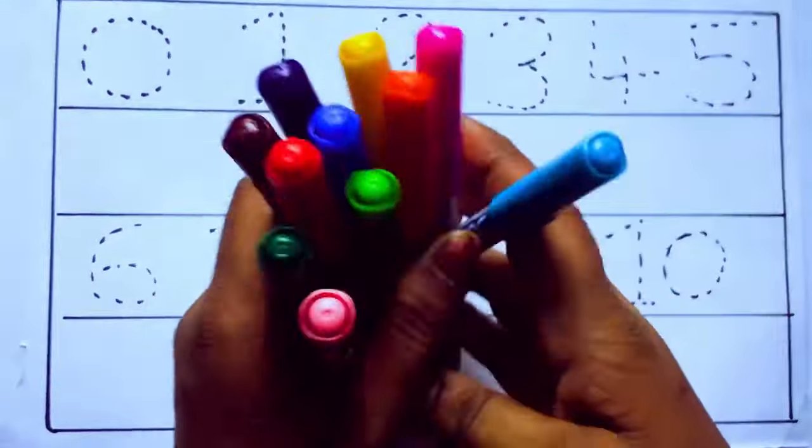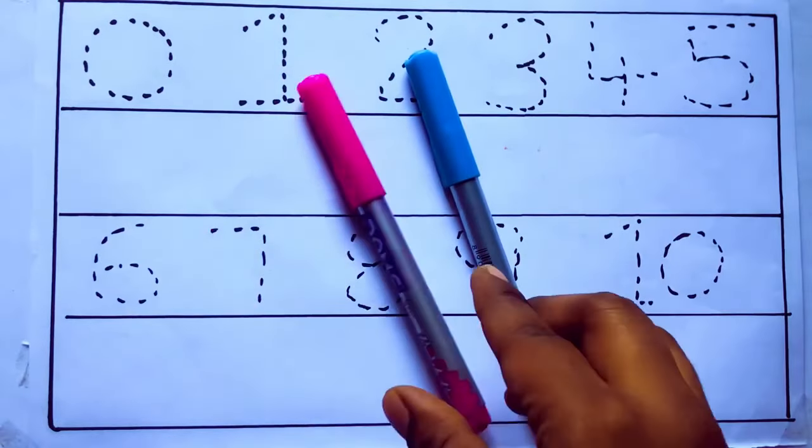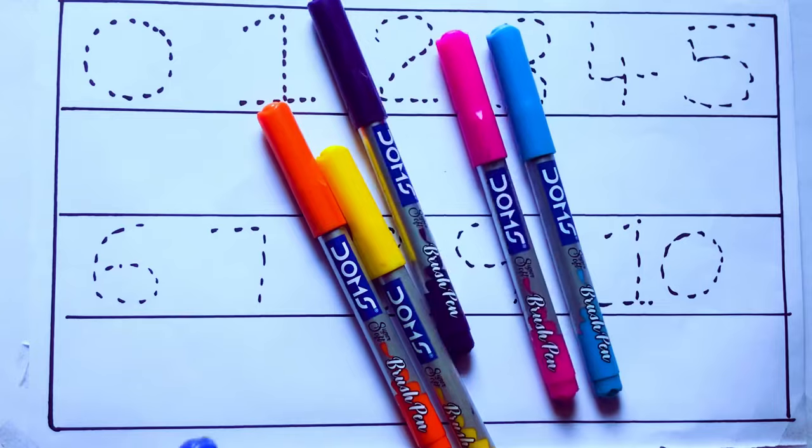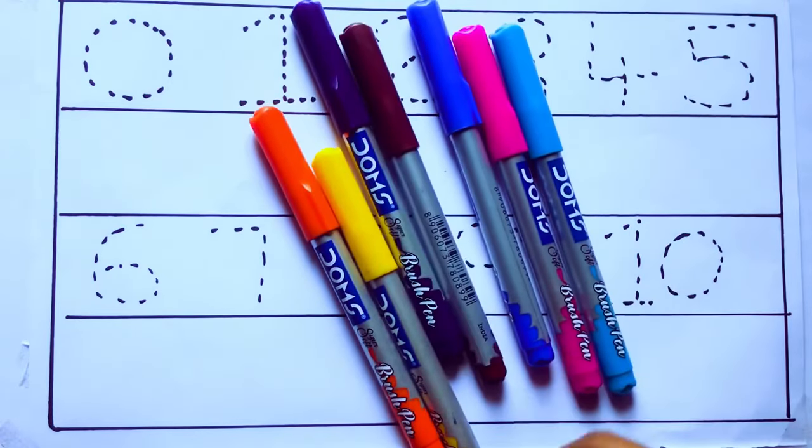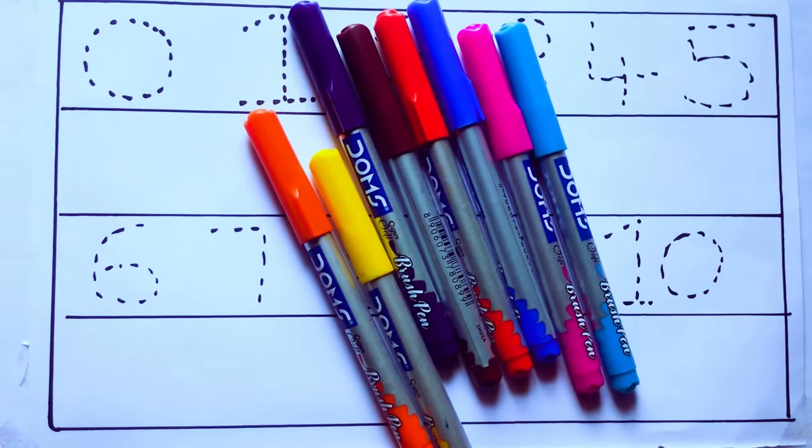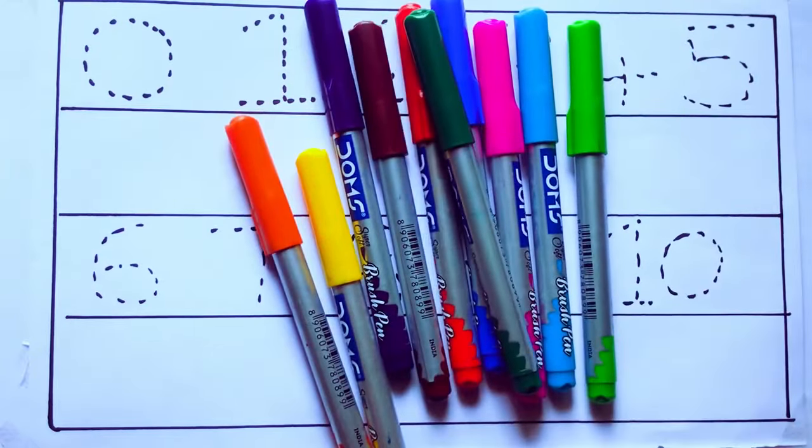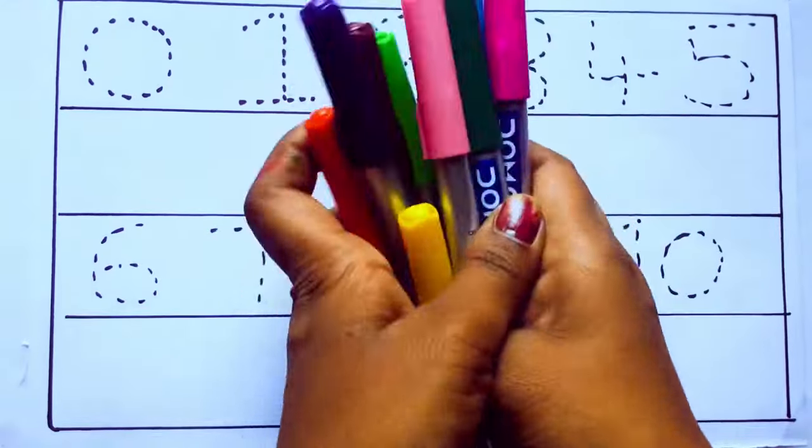Let's learn the names. Sky blue color, pink color, yellow color, orange color, violet color, blue color, brown color, red color, green color, and pink color.